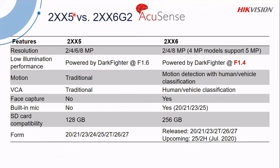Looking at EasyIP 3 versus AccuSense — AccuSense models end with a 6. Focusing on the G2s, you have 2, 4, and 8 megapixel options, and if you drop the frame rate on the 4 megapixel, the resolution can actually go up to 5 megapixel. Both ranges are Powered by Darkfighter, but the G2 now has a larger iris — F1.4. Motion detection is now included for AccuSense classification. These cameras also do the same traditional VCA analytics but with classification included, and can now perform face capture. Built-in microphones are also included.